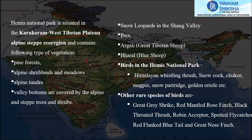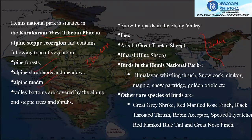The vegetation includes pine forest, alpine shrublands, meadows, and alpine tundra. On its northern side it borders the Indus River, and it also includes the catchment area of the Sumad, Markha, and Rumbak river streams. In the upper mountain areas there is moist alpine vegetation, while lower areas have steppe vegetation.